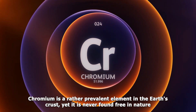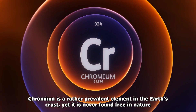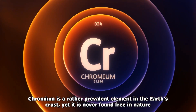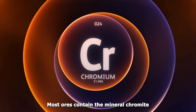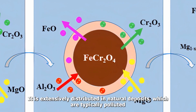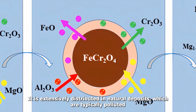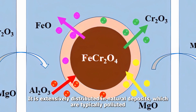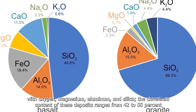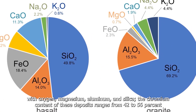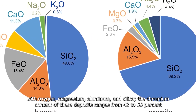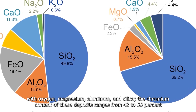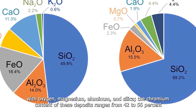Chromium is a rather prevalent element in the earth's crust, yet it is never found free in nature. Most ores contain the mineral chromite. It is extensively distributed in natural deposits, which are typically polluted with oxygen, magnesium, aluminum, and silica. The chromium content of these deposits ranges from 42 to 56 percent.